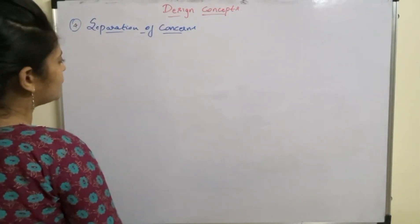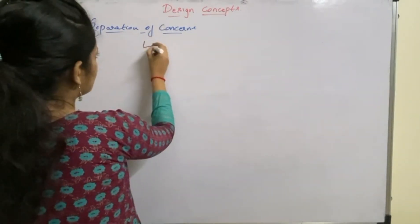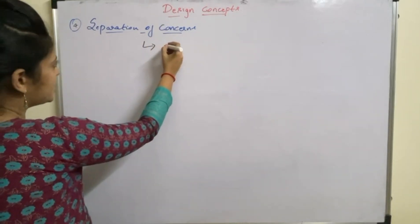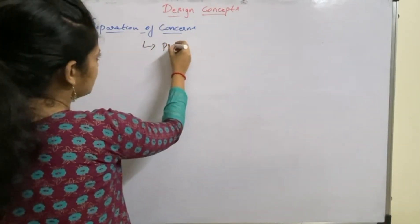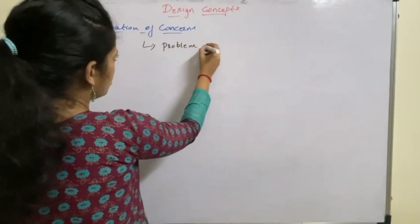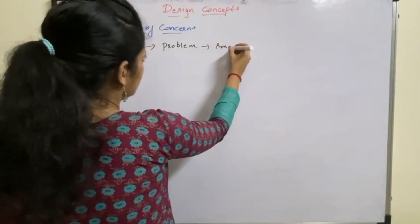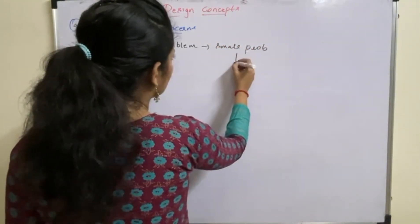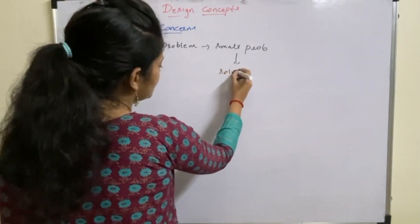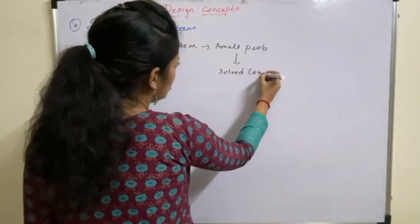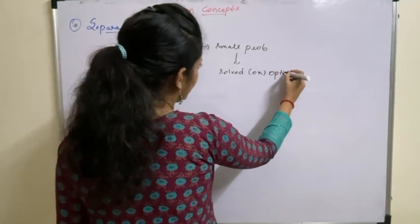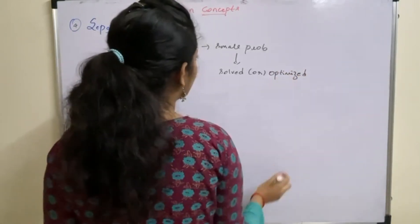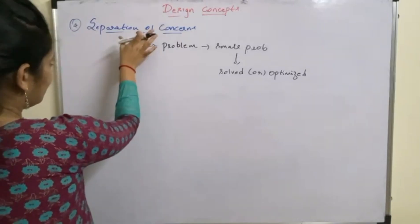The fourth one is separation of concerns. This is a design concept that suggests that any problem can be solved more easily if it is divided into small problems, so that these small problems can be solved or optimized independently.